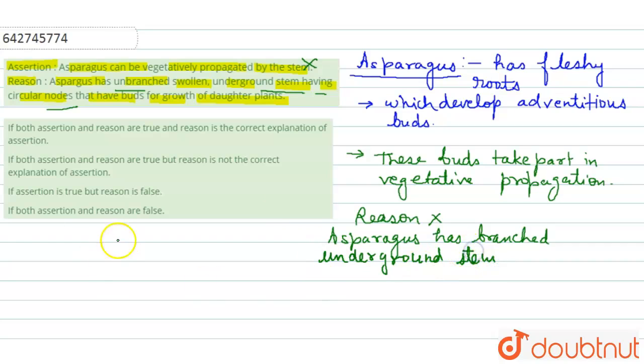Right, so both assertion and reason, both assertion and reason, both are false here. Okay, so our right answer is B. I hope this will answer your question, thank you.